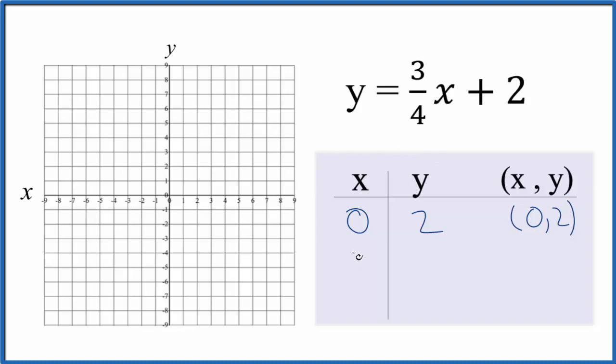So I'm going to put four in for x. Because three-fourths times four, that would give us three. Three plus two, that's five.